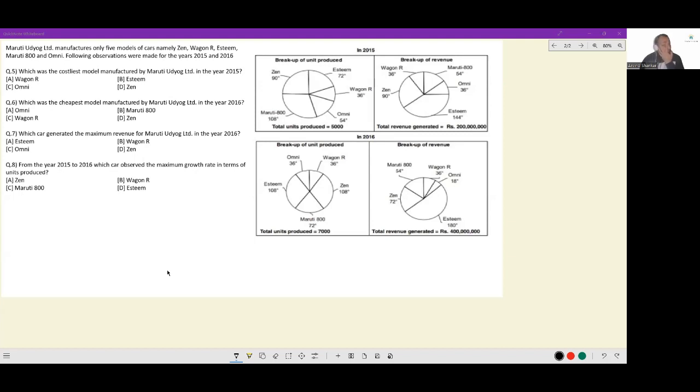Let's look at this set. Maruti Udyog Ltd manufactures only five models of cars, namely Zen, Wagener, Esteem, Maruti 800, and Omni. Following observations are made for the years 2015 and 2016. We have breakup of units produced and breakup of revenue, then breakup of unit produced and breakup of revenue for 2015 and 2016.